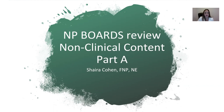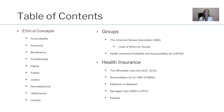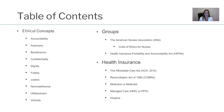Let me show you what we're going to review. You have to feel comfortable with ethical concepts. Here's your terminology: accountability, autonomy, beneficence, confidentiality, dignity, fidelity, justice, non-maleficence, utilitarianism, and veracity. You should know their meanings, how to distinguish one from the other, and know examples of them. I've done that for you, uploaded it with pictures, and kept it really simple, straight to the point, so it's easy for you to remember.